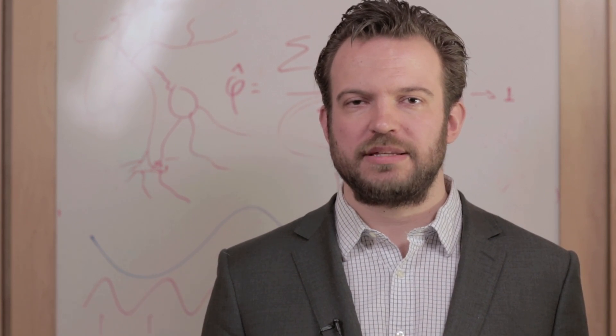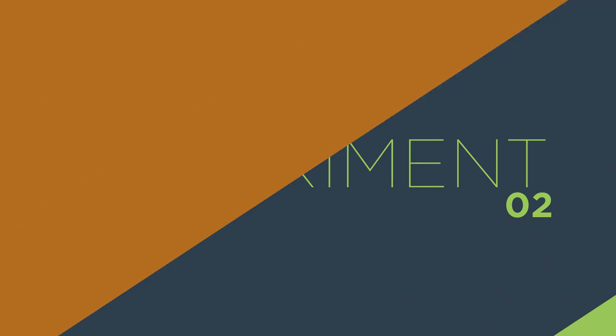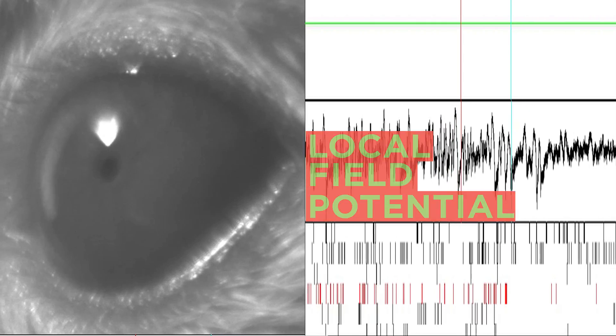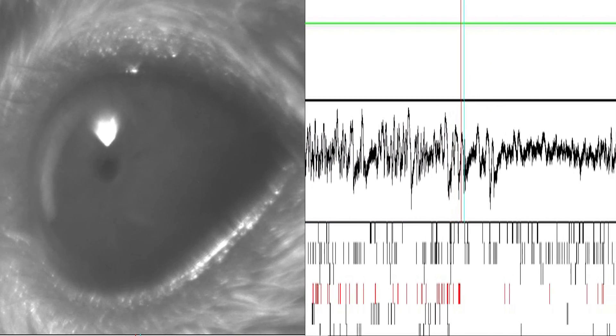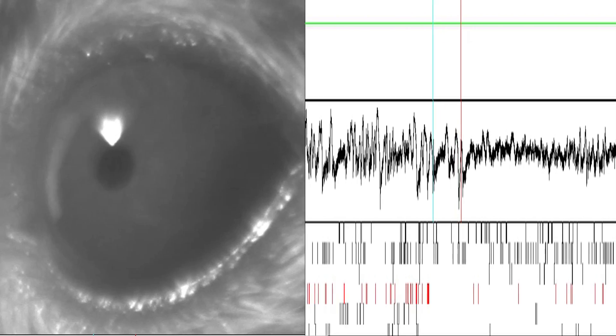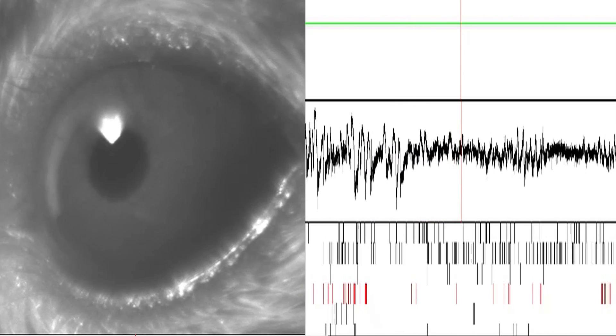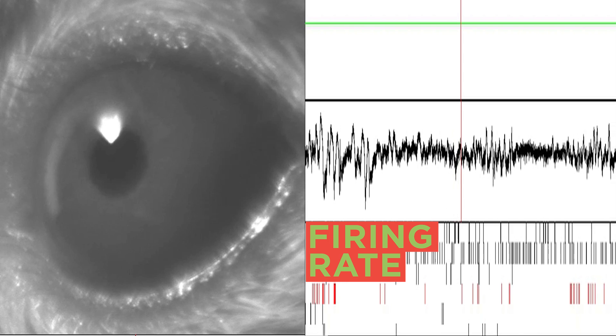To that end, we presented air puffs on the back of the mouse. Here you see an example. The pupil is small and the local field potential shows large amplitude, slow fluctuations. Now we apply an air puff. See that the pupil dilates and that the local field potential desynchronizes. At the same time, the cell's firing rates become suppressed.